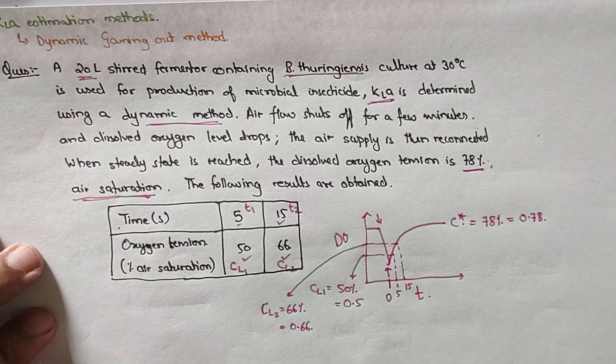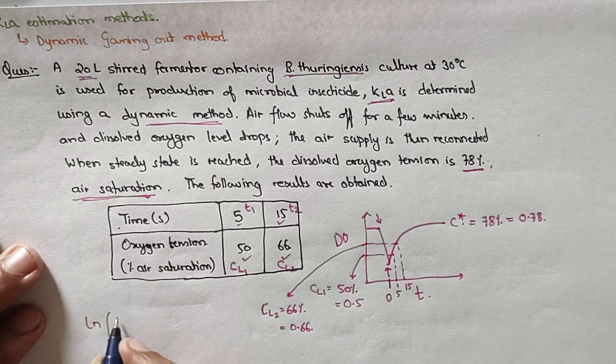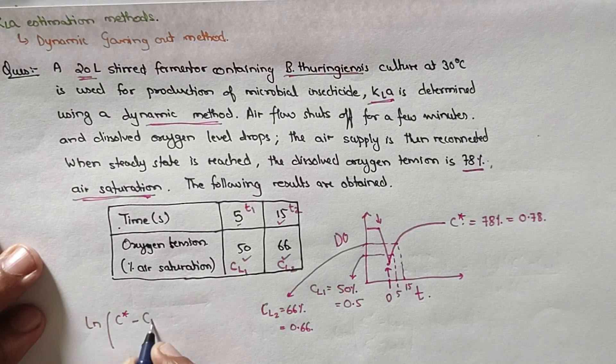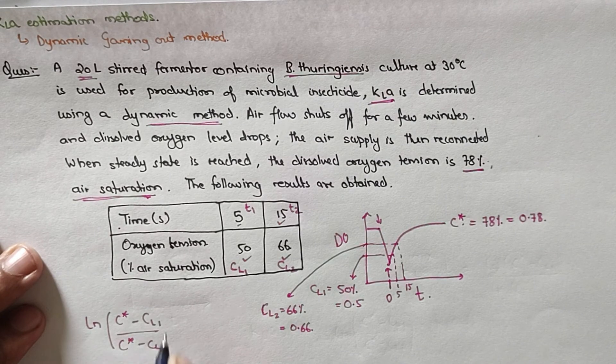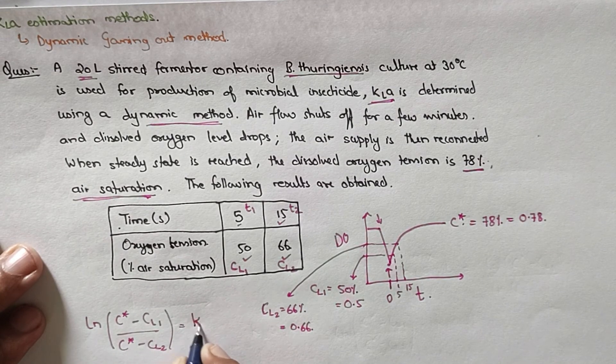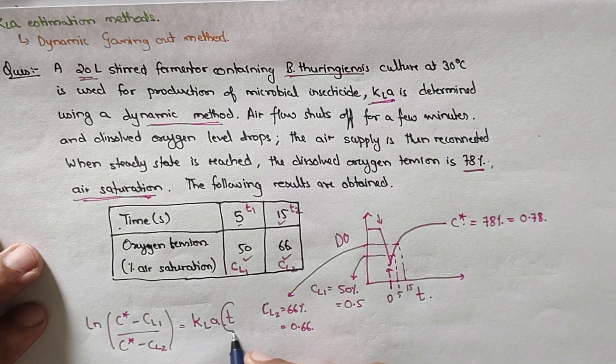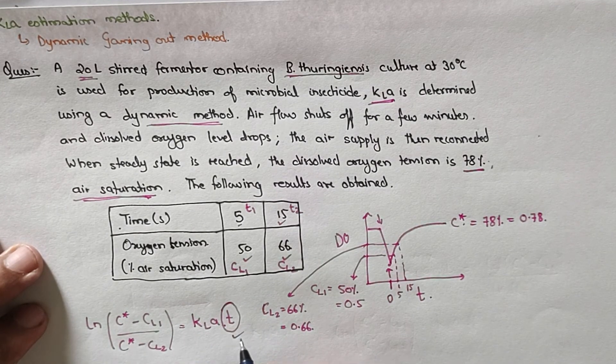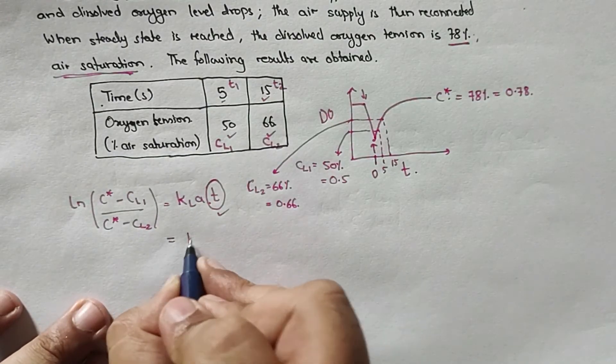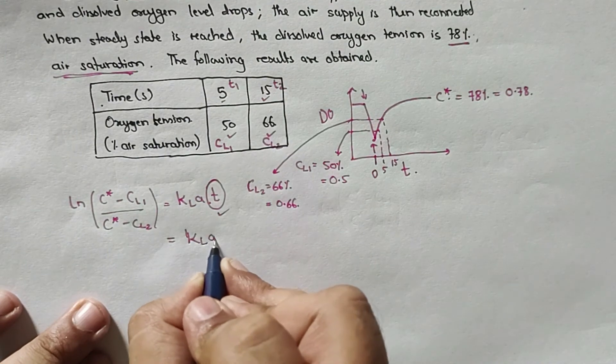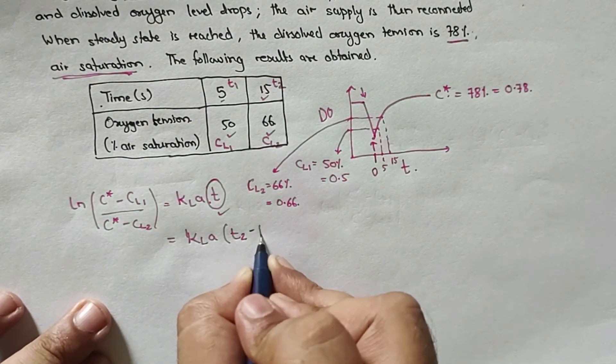Let us apply that same formula. Formula was ln(C* - CL1)/(C* - CL2) = KLA × T. Now here you remember this T is difference in the time. We can also write KLA(T2 - T1).